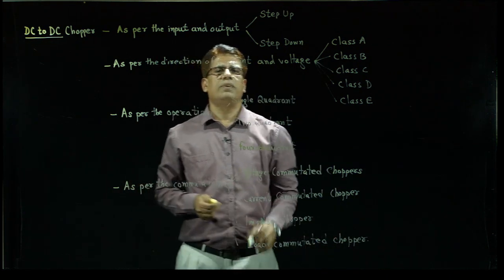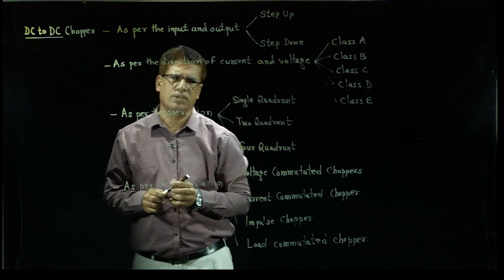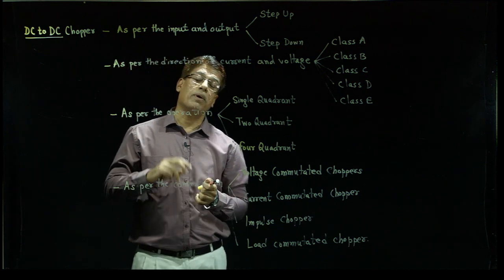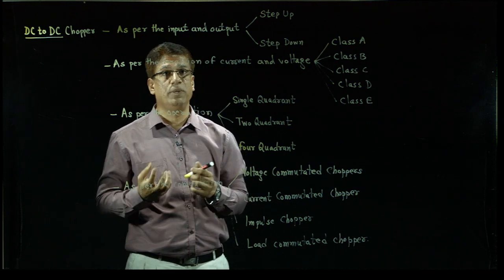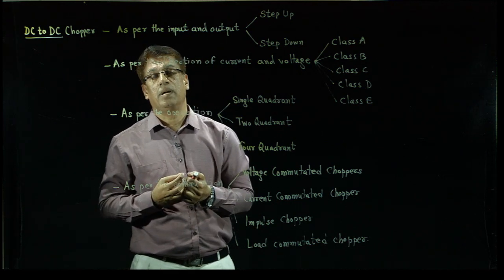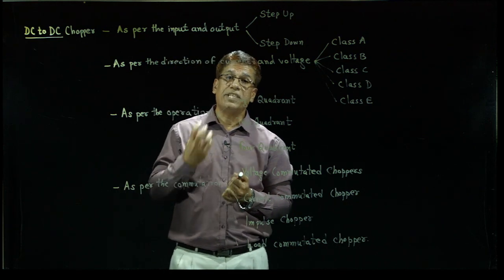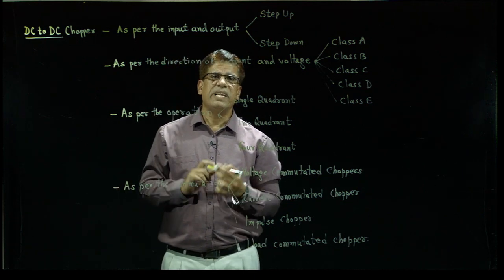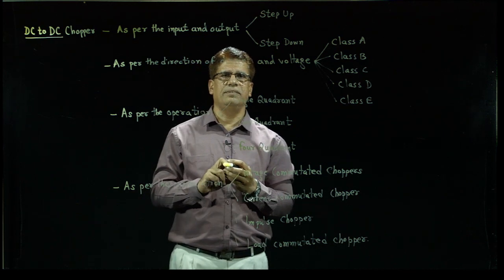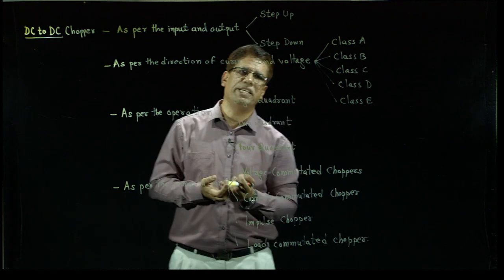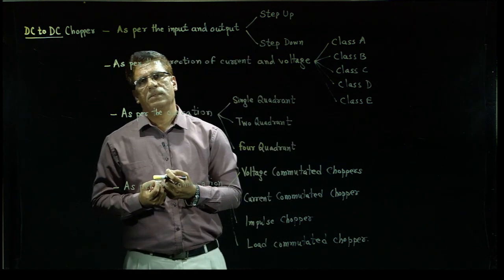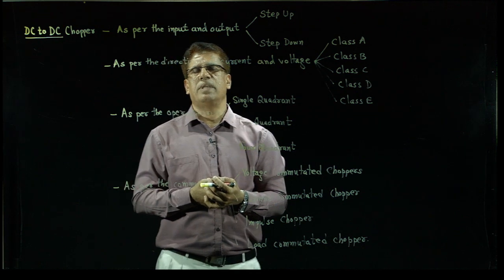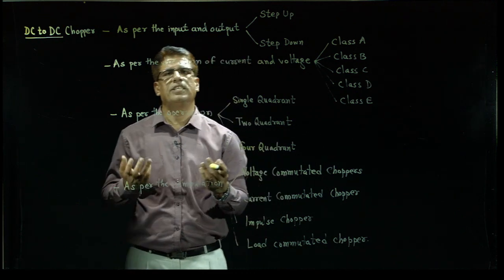We have discussed different types of converters, which are the heart of power electronics. For understanding the operation of all these converters, we need to discuss basic circuits. If you understand the basic operation — how to get the output voltage, how to find current through the circuit — it is very easy to understand power electronics.